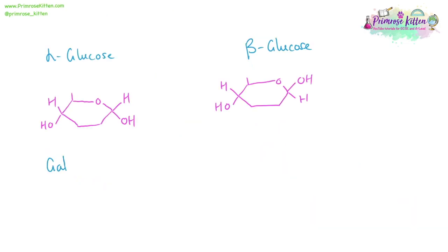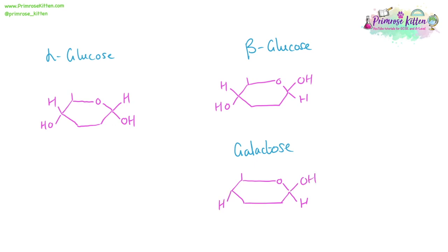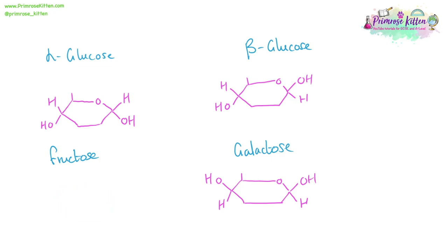Alpha and beta glucose are not the only monosaccharides you need to know. You also need to know about galactose, which has a similar structure to beta glucose, and fructose, which is slightly different. The difference between alpha and beta glucose is the orientation of the OH group and hydrogen on the right-hand side, whereas the difference between beta glucose and galactose is on the left-hand side with the orientation of the OH group and hydrogen.